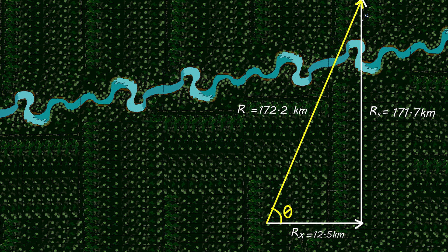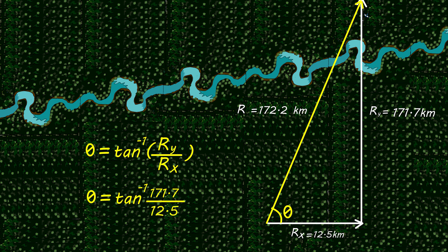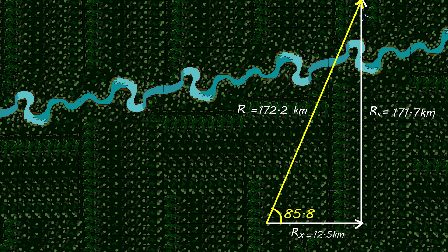To find the direction: theta = tan⁻¹(Ry / Rx) = tan⁻¹(171.7 / 12.5) = 85.8 degrees relative to the x-axis. Therefore, the total displacement of the airplane is 172.2 km at an angle of 85.8 degrees relative to the x-axis.